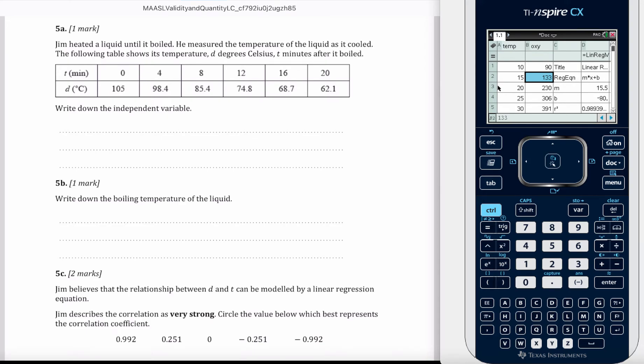Jim heated a liquid until it boiled. He measured the temperature of the liquid as it cooled. The following table shows the time is increasing and the temperature is coming down.